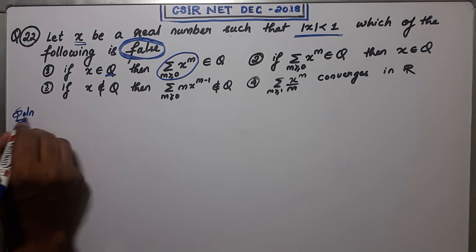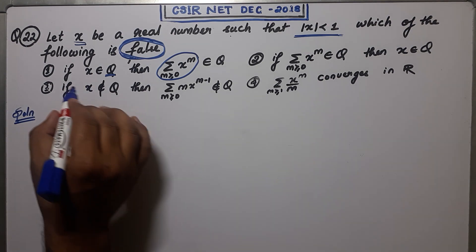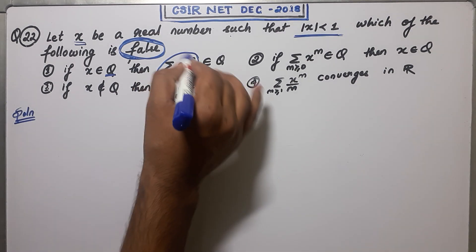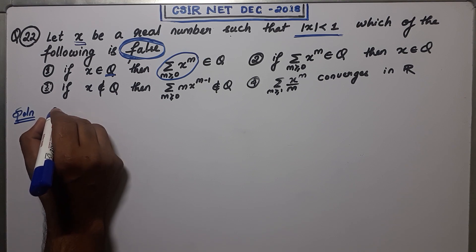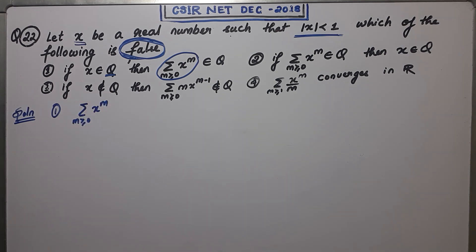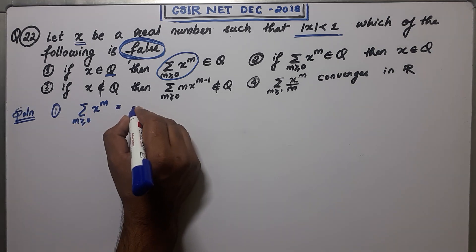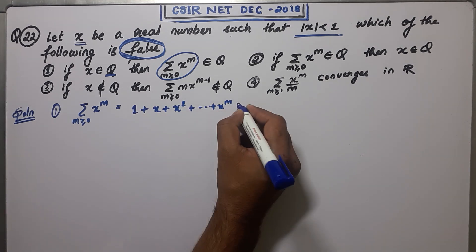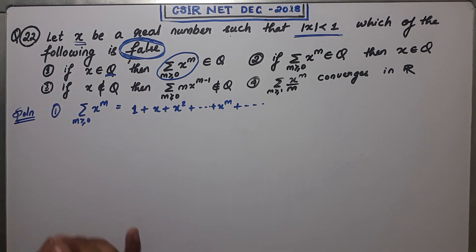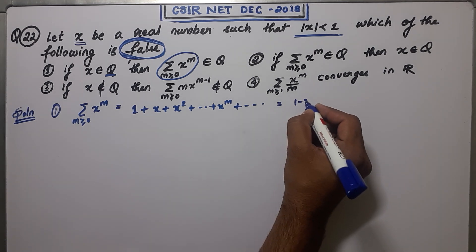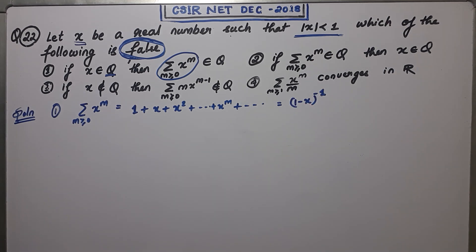In the first option, x belongs to the set of rationals, and you need to check whether the summation Σx^m goes to rationals or not. Just expand it — you see the summation looks like x + x² + ... + x^m, which is an infinite expansion. Before doing this question, you must know the sum of this expansion. The sum of a few important expansion series are very important to solve questions like this.